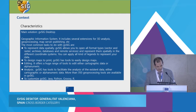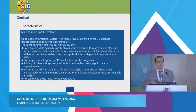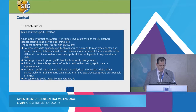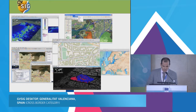Now, our characteristics. GVSIG desktop is a geographic information system. With GVSIG desktop, we can represent data spatially, design maps, and do editing. GVSIG desktop has a lot of plugins for 3D analysis, network analysis, geoprocessing, and connecting with other programs for statistics. In this slide, you can see several screenshots of the application.